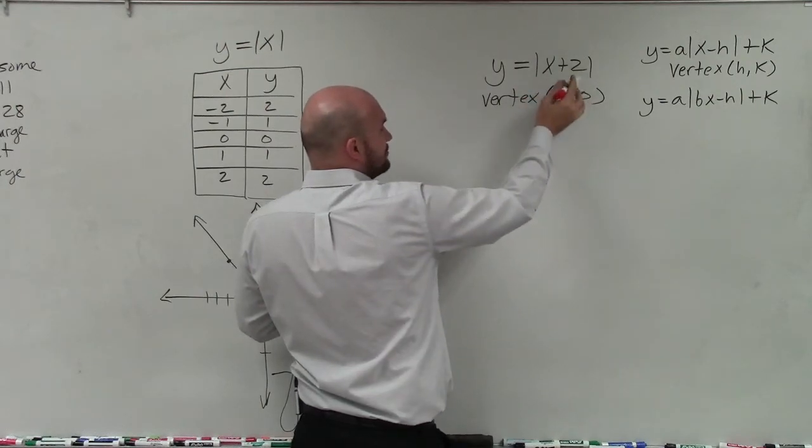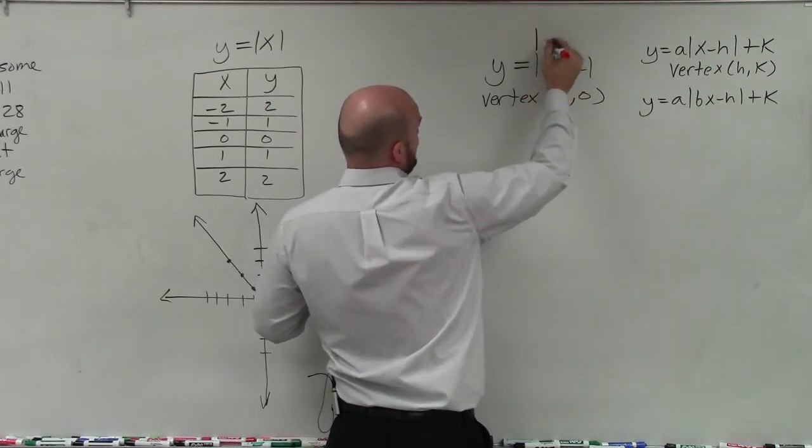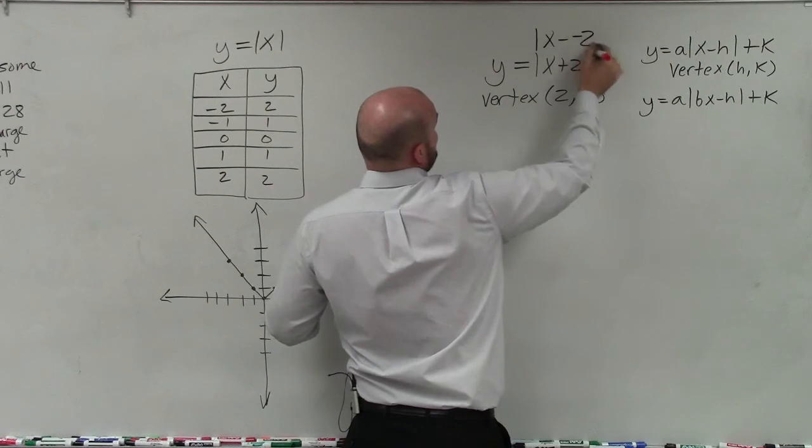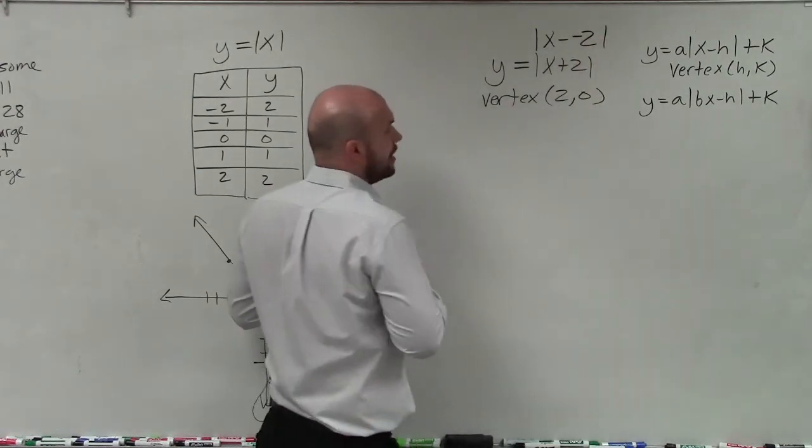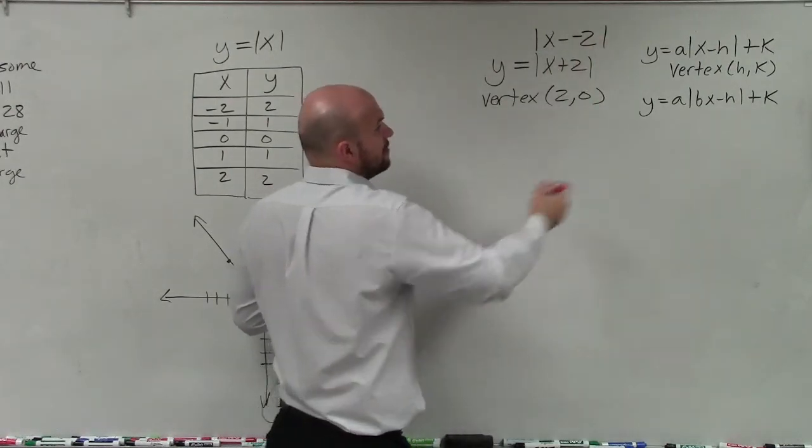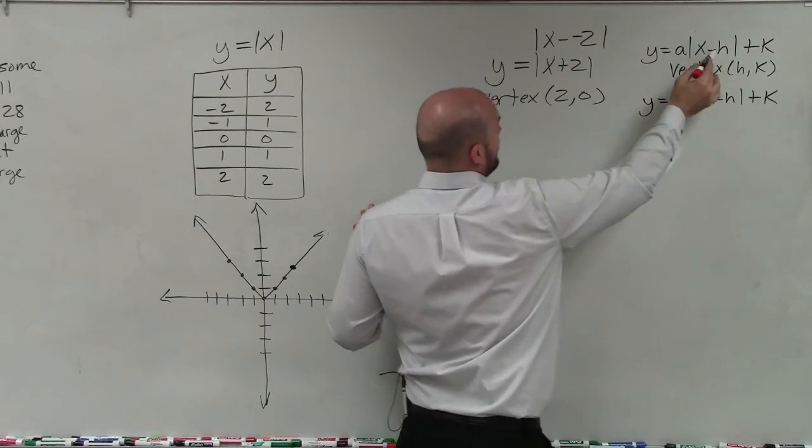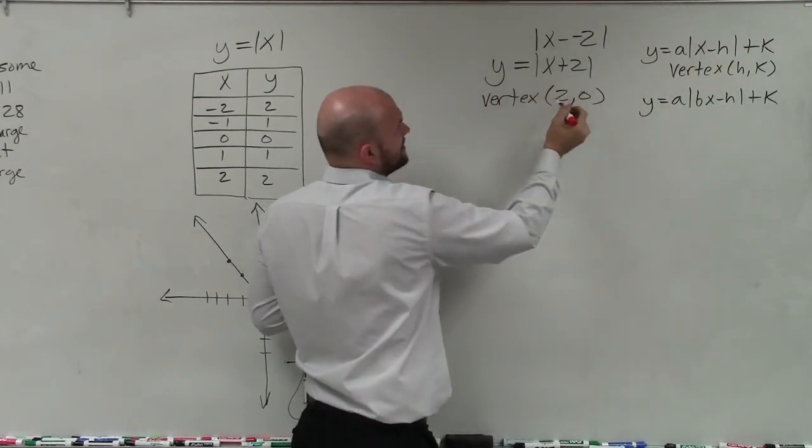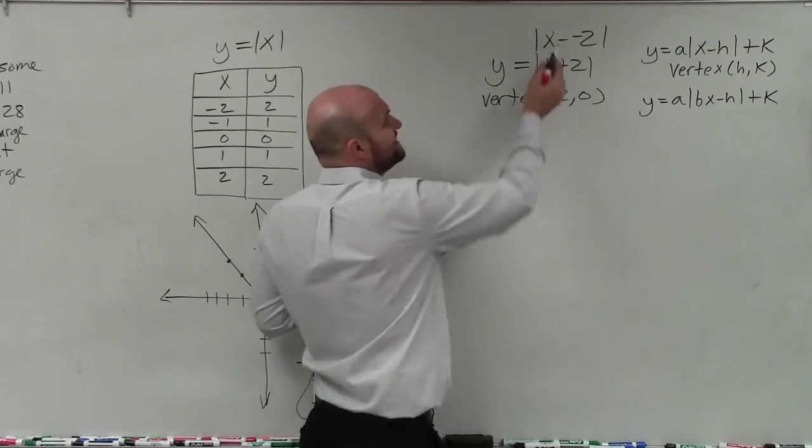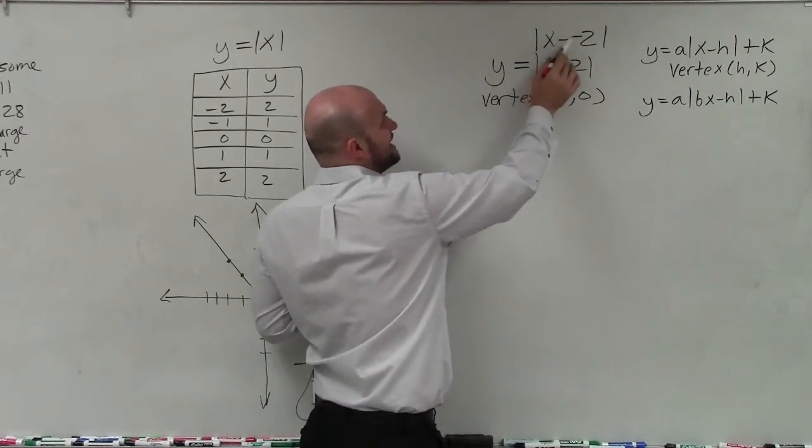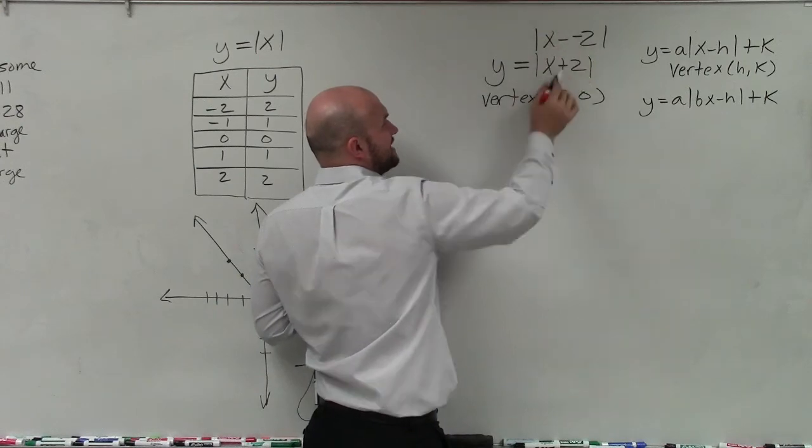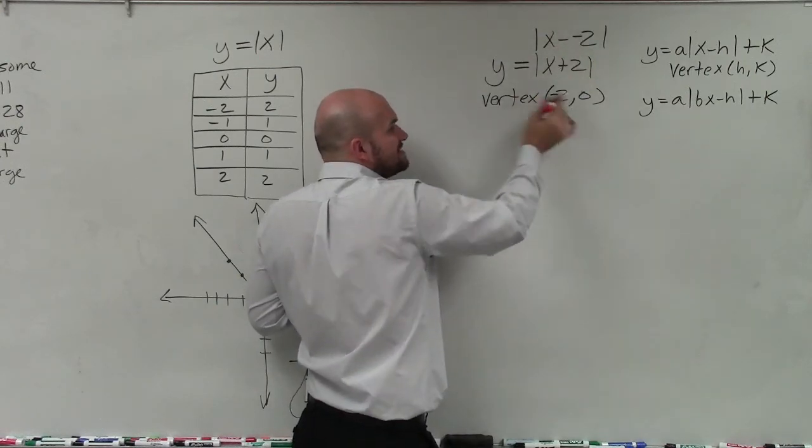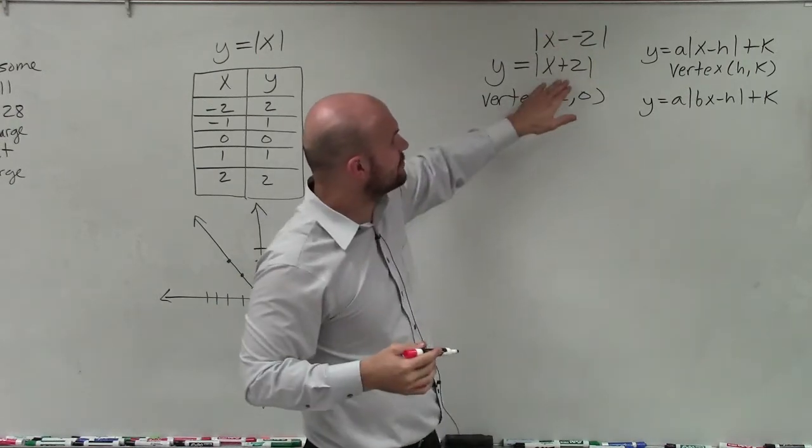But when I have the x plus 2, remember it's x... you could also think about it this way: x opposite of negative 2, right? Remember, it's x opposite of h. So... oh, what am I doing? That's a negative 2. Obviously. So it's x minus h. Well, that means h is negative 2. Minus a negative is plus. So my vertex is negative 2.